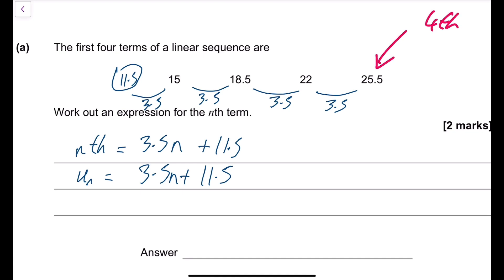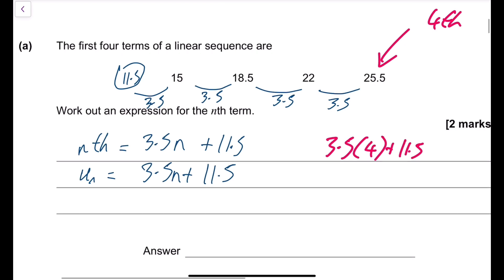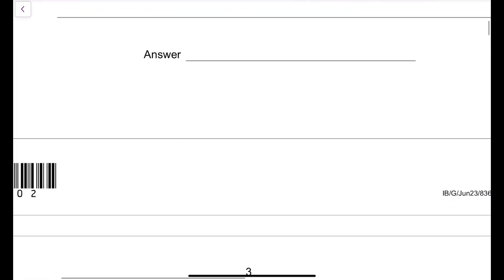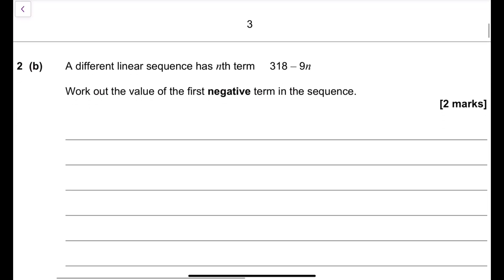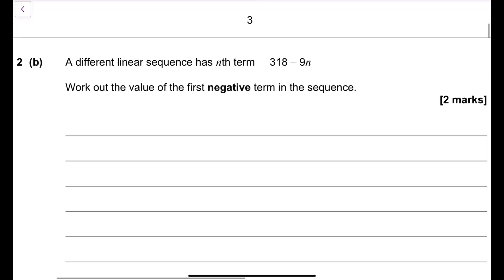Check with the fourth term: 3.5 times 4 plus 11.5 equals 25.5 — correct. The next part says a different linear sequence has an nth term of 318 minus 9n; work out the value of the first negative term.